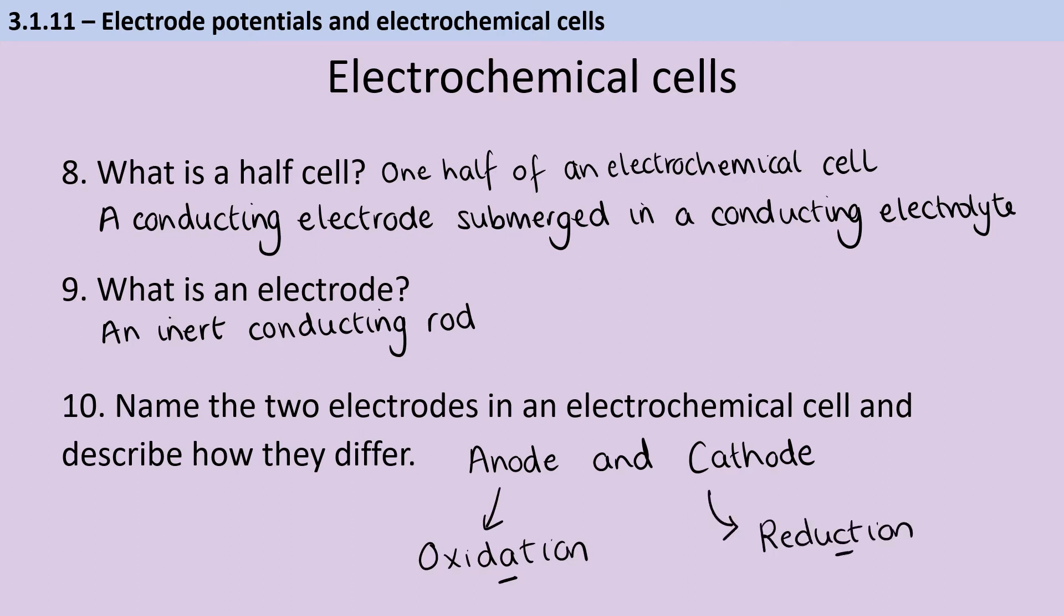Be really careful here. Some people, when they learned about electrolysis at GCSE, they were taught a mnemonic which is PANIC, so positive anode, negative cathode. And that's fine for electrolysis, but it doesn't work for electrochemical cells, which is why I prefer this version of oxidation and reduction, because that works for both electrolysis and for chemical cells.